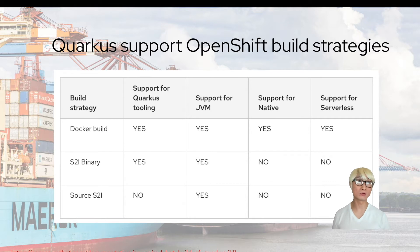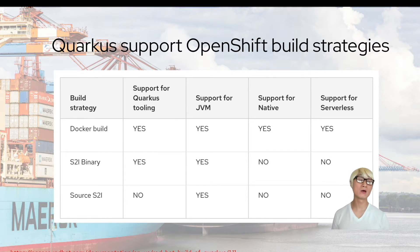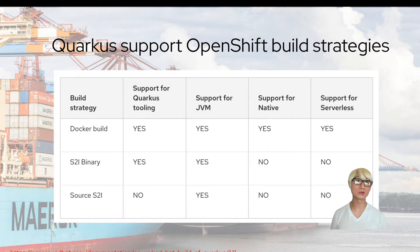For example, Quarkus tooling supports JVM and native compilation, but also serverless functions. You can also use S2I build or S2I binary build, but you have some limited support with Red Hat Build of Quarkus.